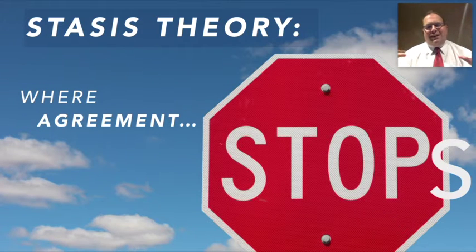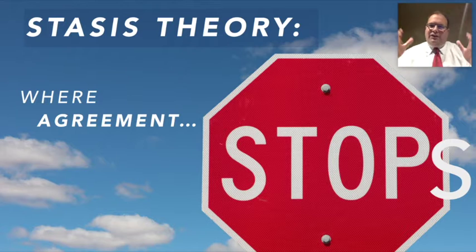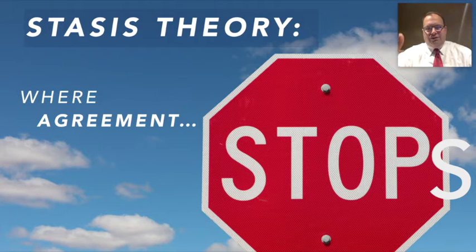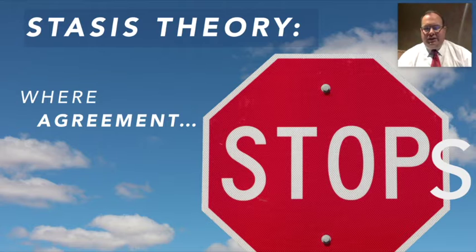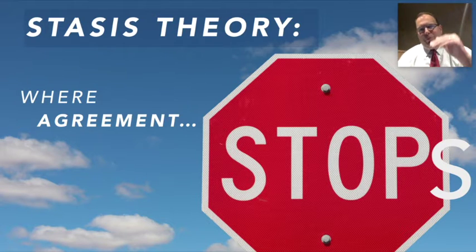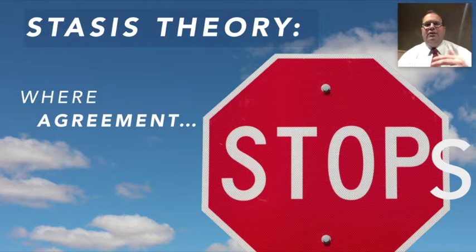It's almost like a meat grinder or a funnel — you dump your issue into it and it takes us through four stages. Once we've dumped our issue through this theory, we find out where agreement stops. And at that point, where agreement stops is the point where we can legitimately tackle the issue.